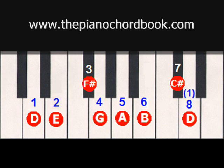Now the D scale consists of seven chords, each built off of the seven notes within the scale. So if we start on the note D, we can build a chord — a D major chord — by going D, moving up to the third scale degree, F sharp, and then up to the fifth scale degree, A. D, F sharp, A make up the D major chord.